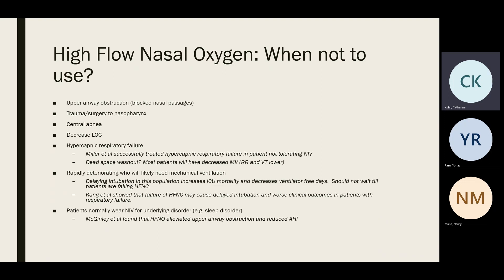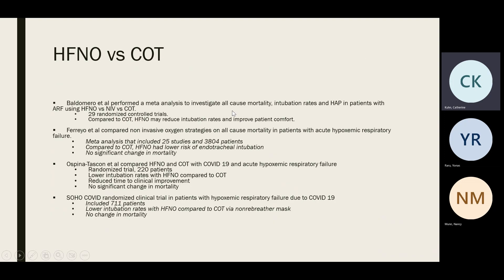Patients with underlying sleep disorders — obesity hypoventilation syndrome or obstructive sleep apnea — who are extubated are probably better served initially with BiPAP or CPAP. However, McGinley et al. found that high flow nasal cannula was able to overcome upper airway obstruction and reduce AHI, so theoretically it can work, but it should not be the primary go-to method for these patients.